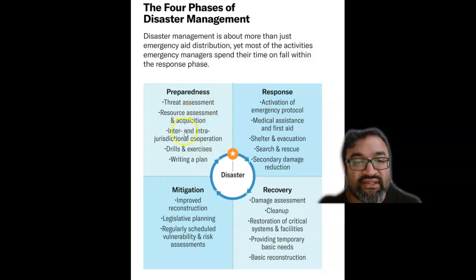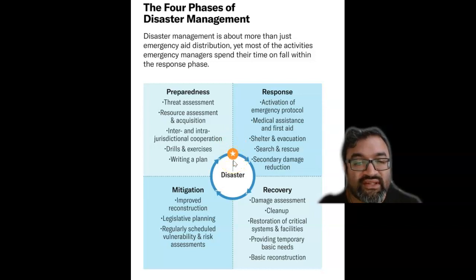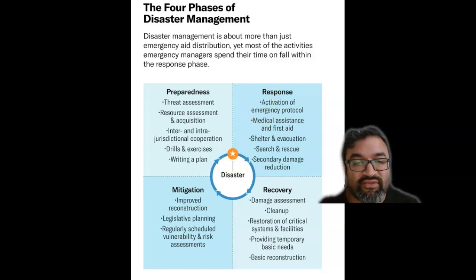This is one phase of how to treat a disaster, and this star represents the place for the disaster taking place. What is the response? Activation of emergency protocol, medical assistance and first aid, shelter and evacuation, search and rescue, and secondary damage reduction.